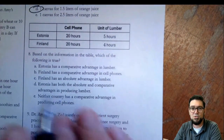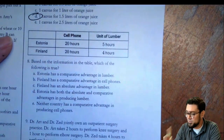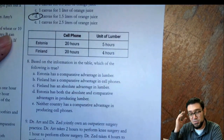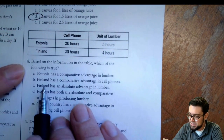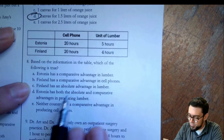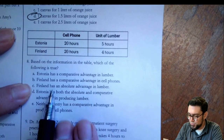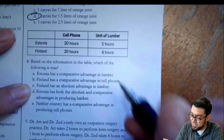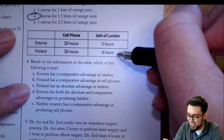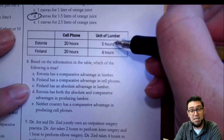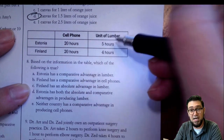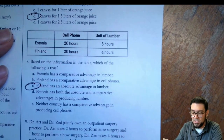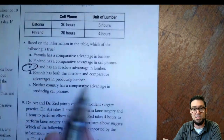Question eight: which of the following is true? First thing we notice — it's an input problem, it tells me how many hours it takes. Let's first look at absolute advantage. Finland has absolute advantage in lumber — they can do it in four hours, Estonia takes five. So Finland has absolute advantage in lumber, and I know all the other answer choices are wrong.